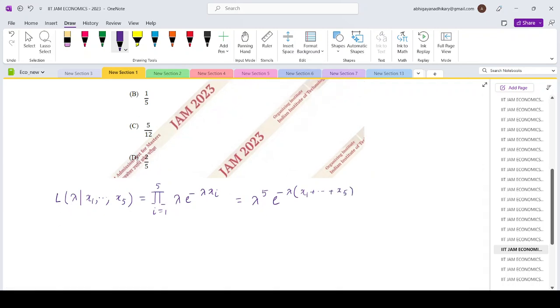Now define the log likelihood which is small l of lambda given X1 up till X5. That would be 5 times log lambda minus lambda times summation i running from 1 to 5 Xi.